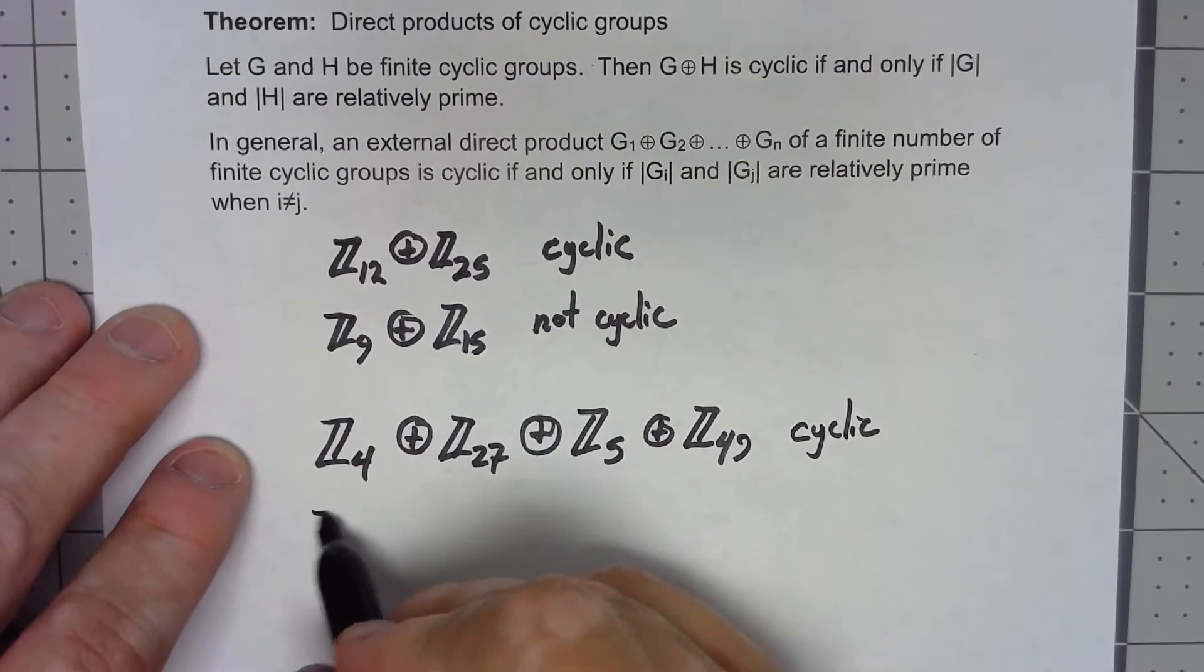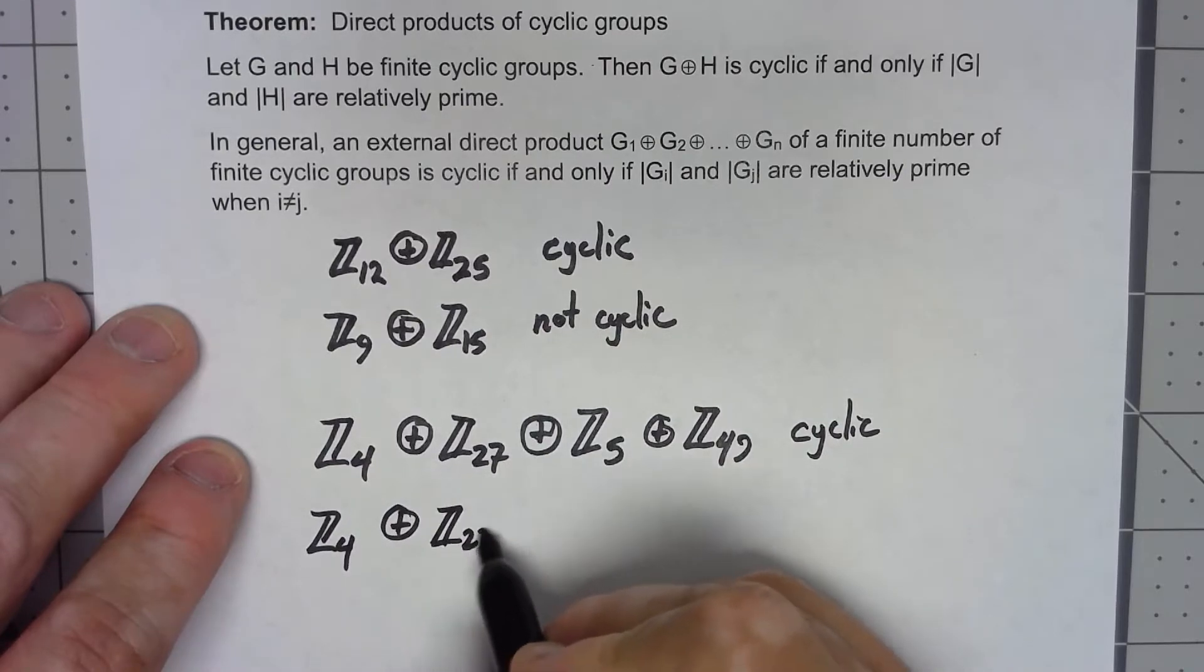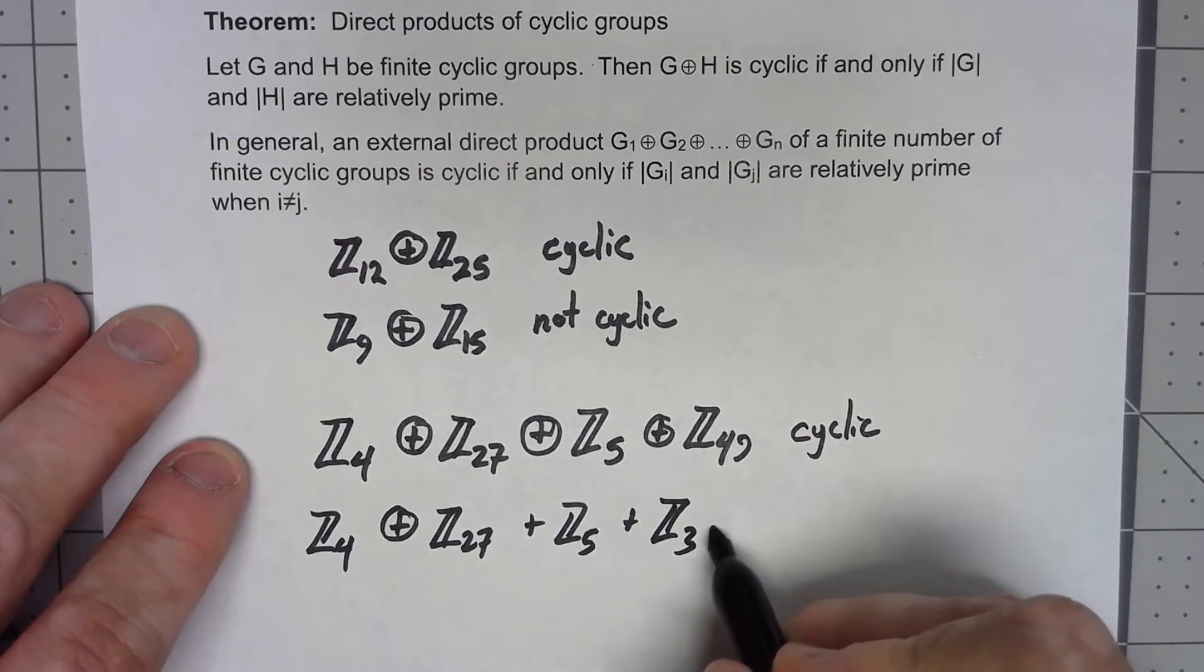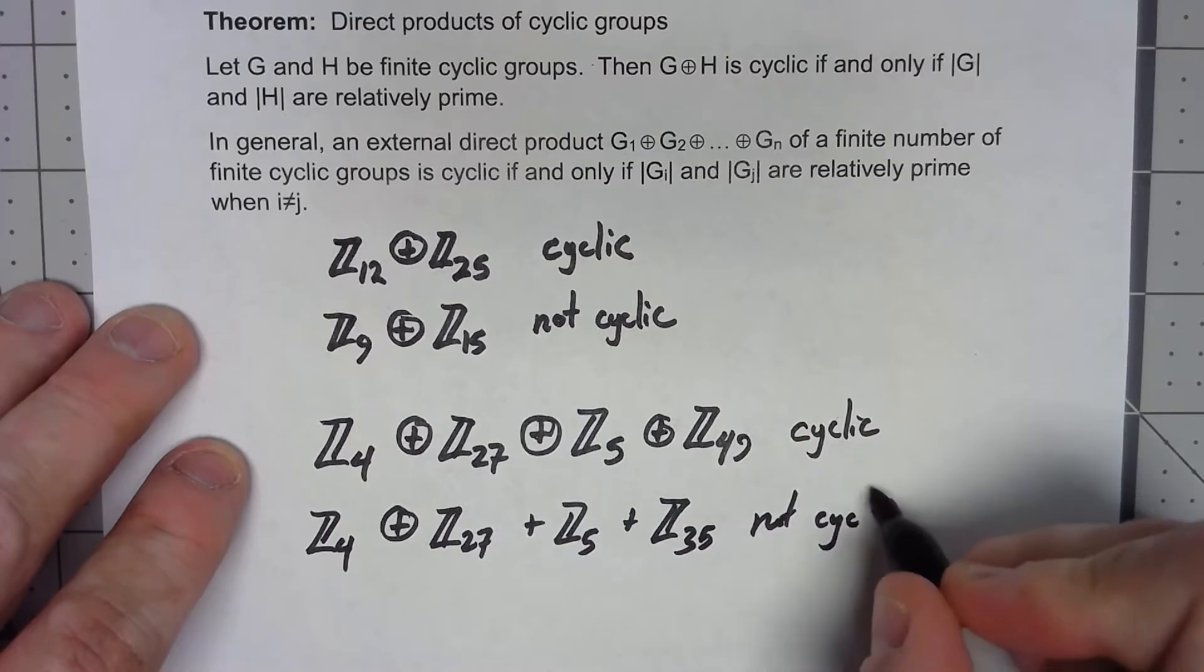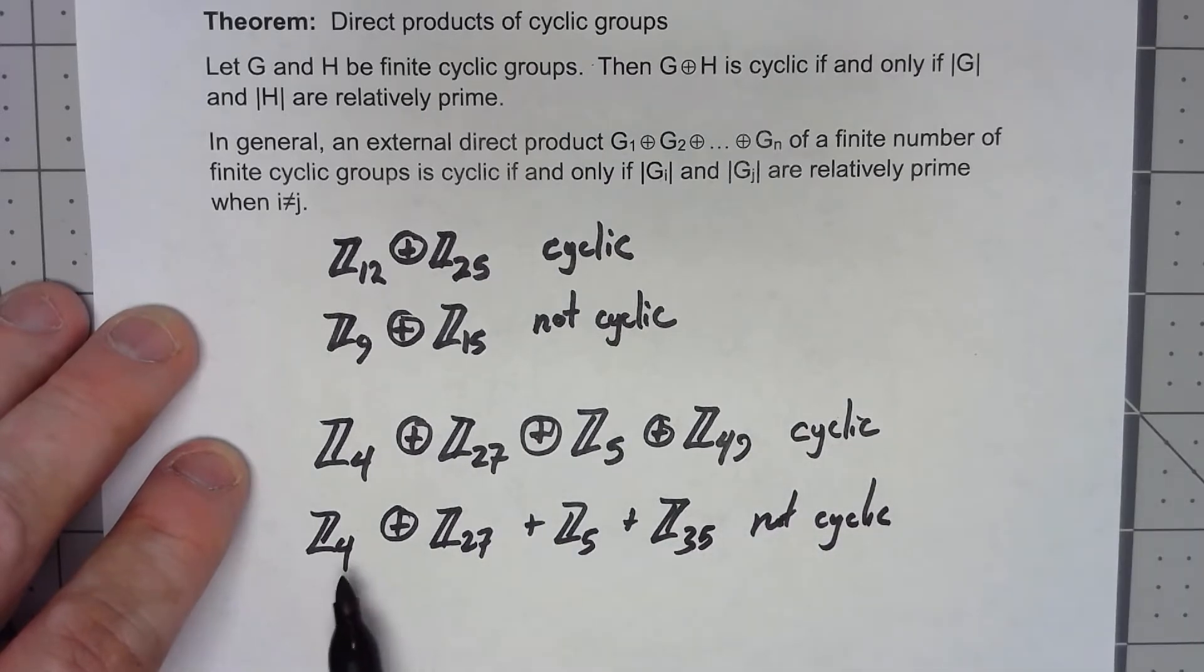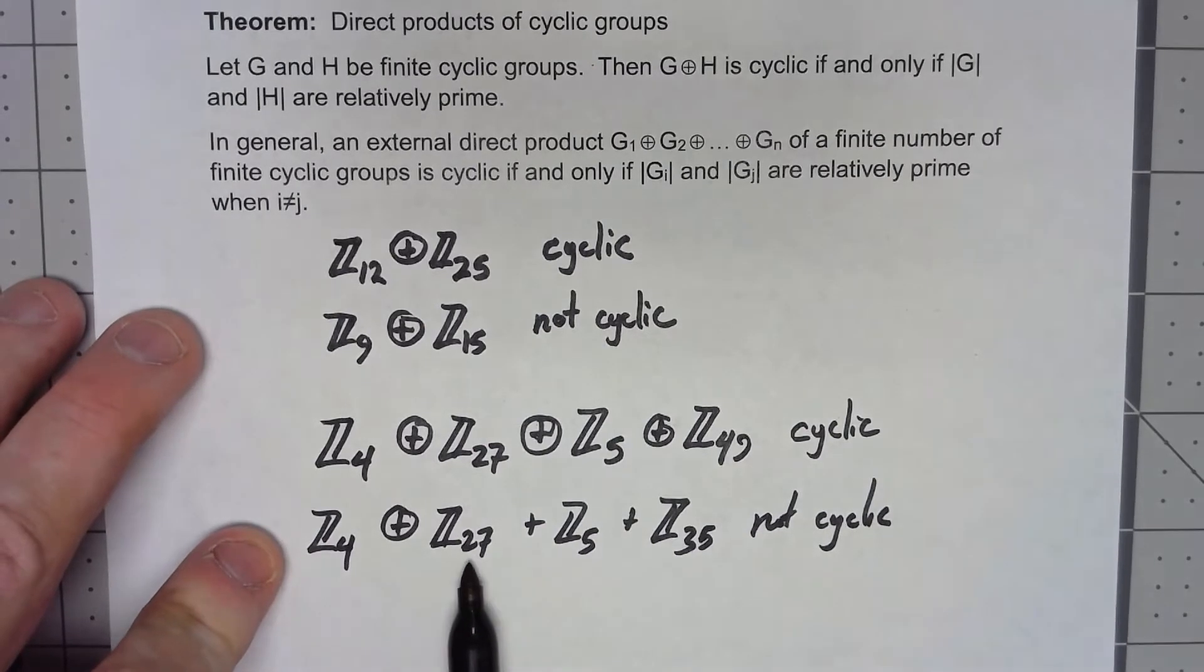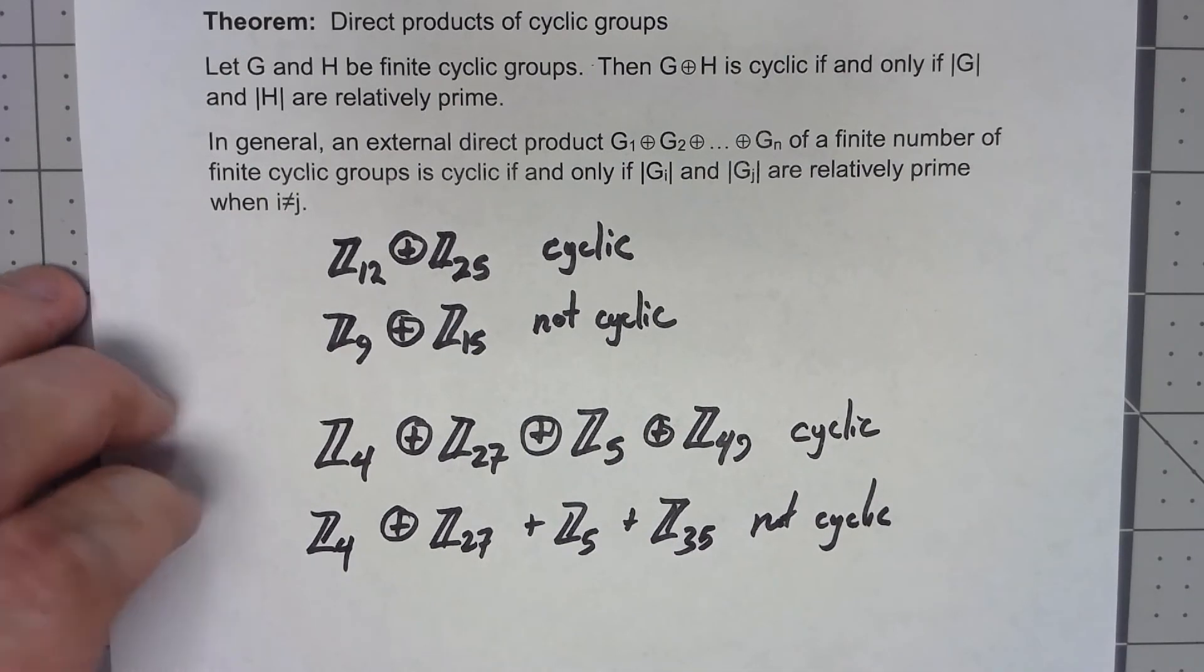On the other hand, if I started out the same way, Z4 plus Z27 plus Z5 plus Z35, that's not going to be cyclic because this is relatively prime to everything else. This is relatively prime to everything else, but Z5 and Z35 are not relatively prime. The greatest common divisor is 5. Because they share a factor, it's not cyclic.